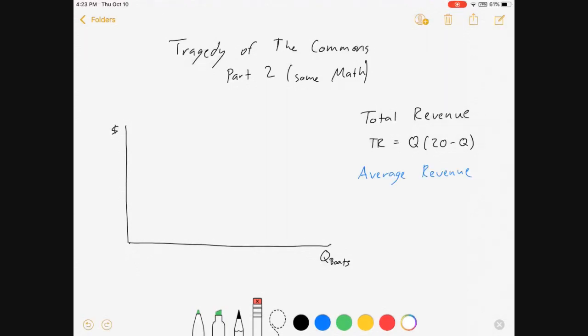We want to find the average revenue curve. Average revenue is equal to total revenue over Q, which comes out to be 20 minus Q. And if we want to graph that, it's going to look something like this. Average revenue, and there's a 20 there and a 20 there. It's not to scale, and you'll get over it.